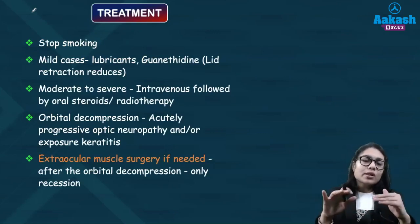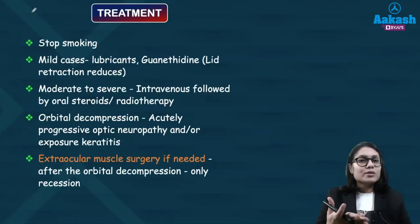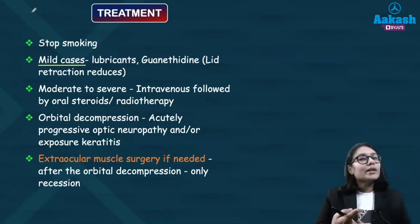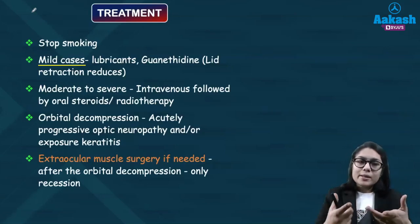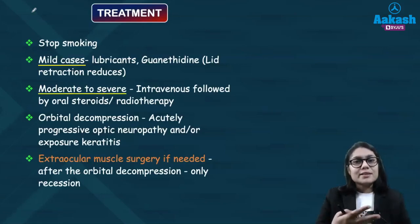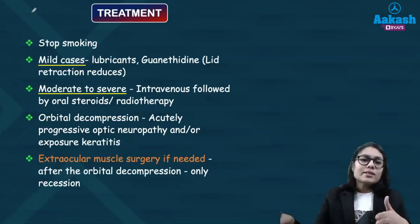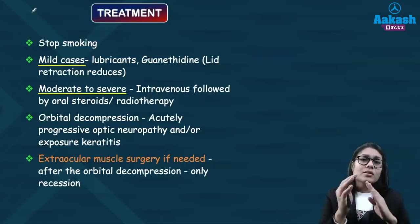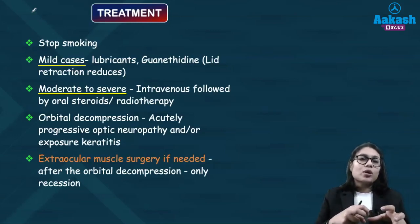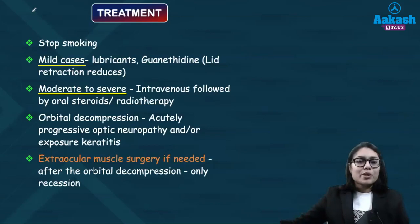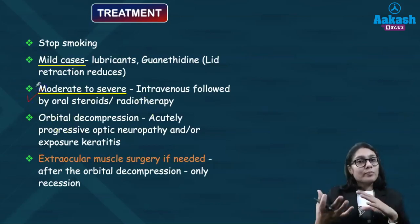Treatment starts with controlling thyroid levels to normal and stopping smoking. In mild cases, lubricants are sufficient to alleviate symptoms during the acute phase. Guanethidine can be given to reduce lid retraction. In moderate to severe cases of proptosis, a short course of intravenous steroids followed by oral steroids in tapering doses is used. Orbital radiotherapy may also be considered when optic neuropathy or compression from edema is suspected, though steroids are generally better at controlling inflammation during the active phase.